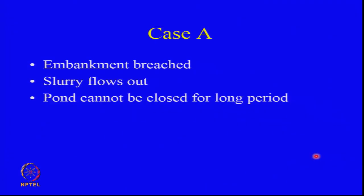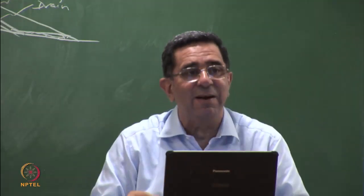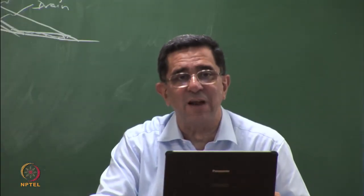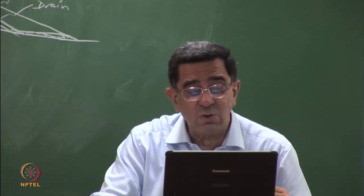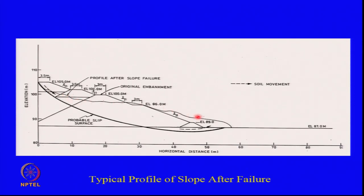Let us look at two case studies. In the first case the embankment was breached, slurry had flown out, but the thermal power station was operating. The field engineers wanted the embankment rectified very quickly. The original dike design had soil, sand drain, and toe. If the sand drain is thin it can malfunction very easily, and sometimes you cannot establish whether the sand drain is actually operating or is clogged without inspecting the downstream side.